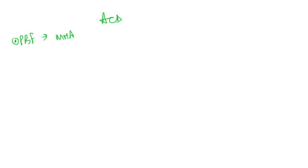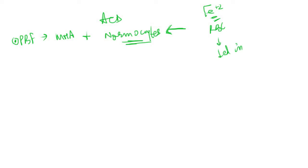Looking at the clinical findings in anemia of chronic disease, in the peripheral blood film we will see microcytic hypochromic anemia, but there will also be some normocytes. This is because when the anemia is initially developing, iron is still present, so the RBCs are decreased in number but normal in size — they are normocytes. After some time, as iron gets depleted, the RBCs become microcytes. So we have a mixed picture of normocytes and microcytes.